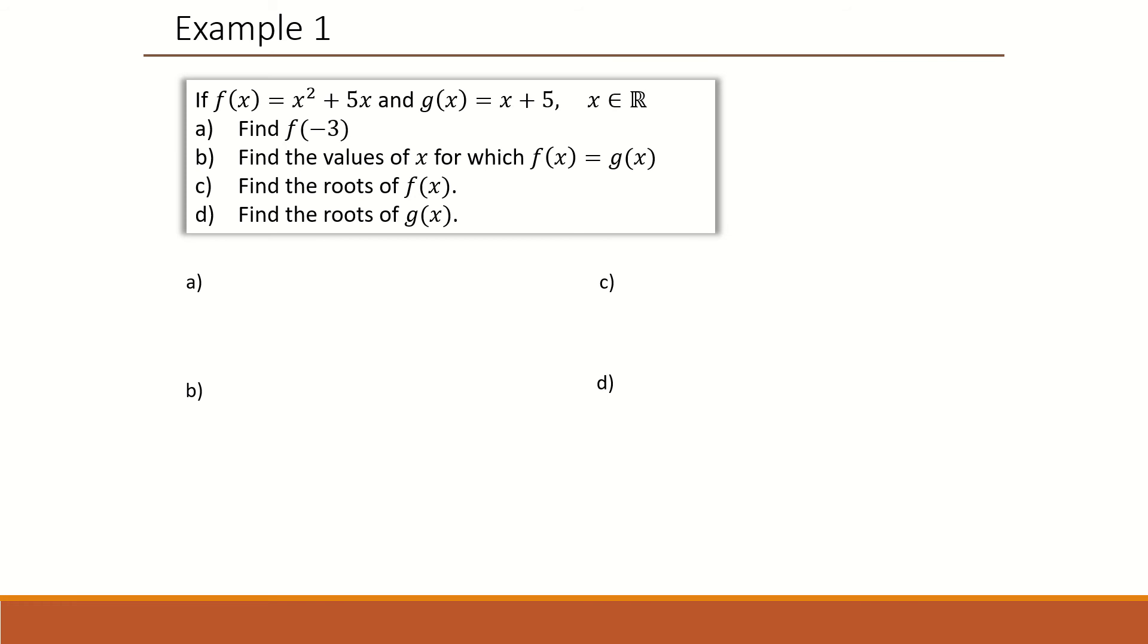So for the first part, you would input x equals to minus 3 and you should get minus 6. For part b, you would equate f and g to give you x squared plus 5x equals to x plus 5. Move everything to one side to equal it to 0. Factorize and it should give you the answer of x minus 5 and x equals to 1. For part c, the roots of a function is given when f is equal to 0, which in this case is 0 and minus 5.